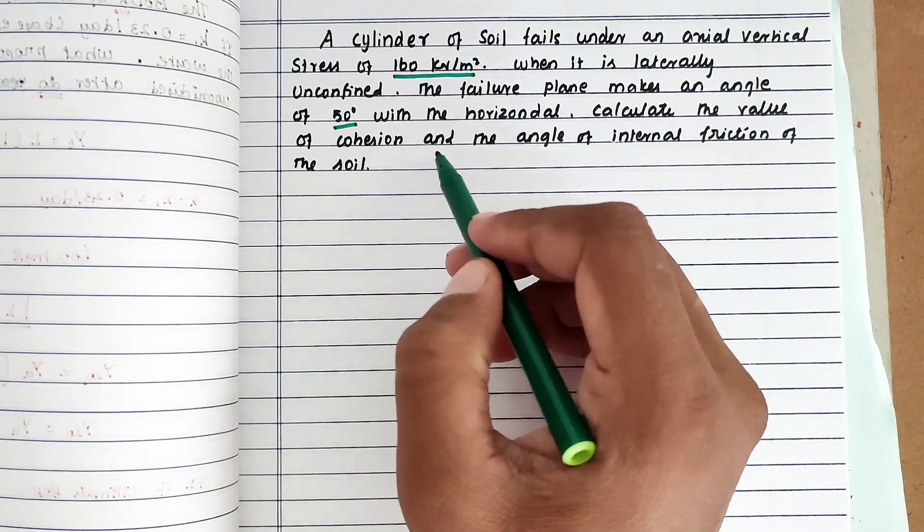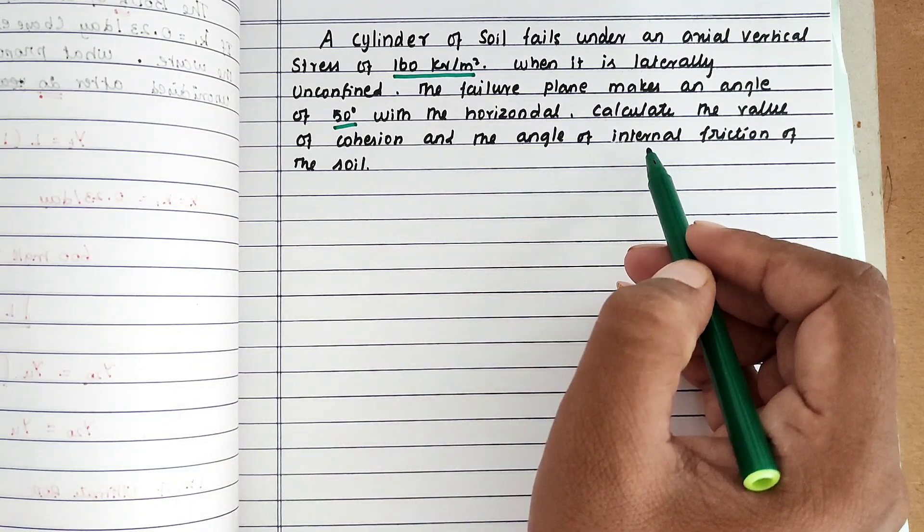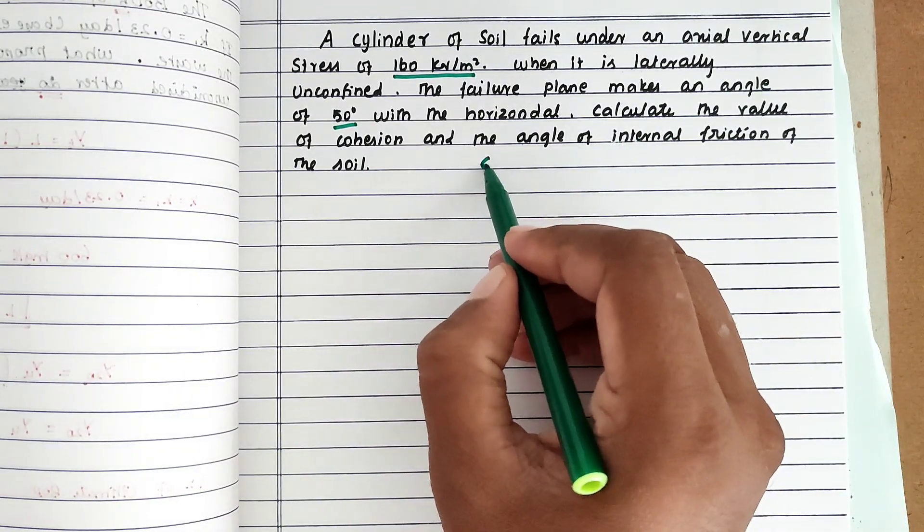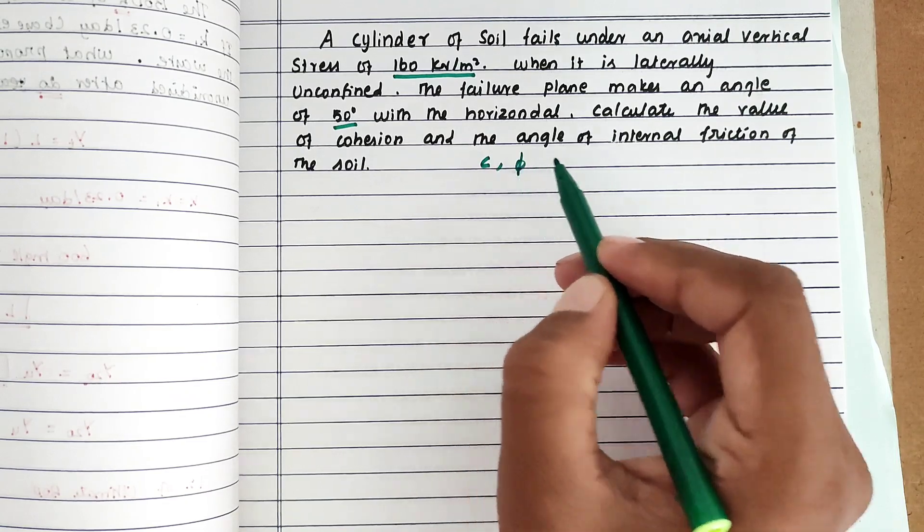Calculate the value of cohesion and the angle of internal friction of the soil. So we have to find out c as well as the angle of internal friction phi.